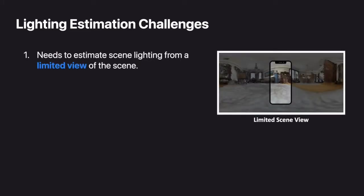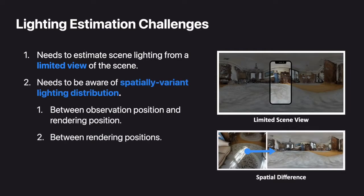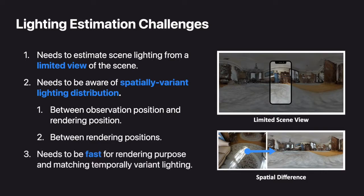First, it needs to estimate scene lighting from a limited view of the scene. Second, it needs to be aware of spatially varying lighting distribution. And finally, it needs to be fast for rendering purposes and matching temporally varying lighting.